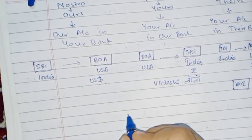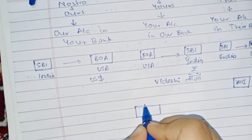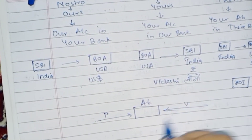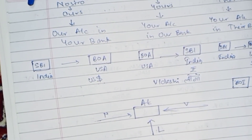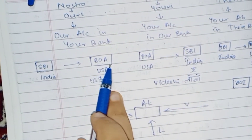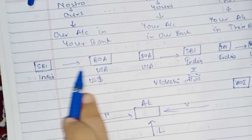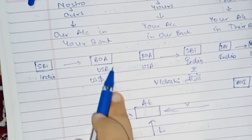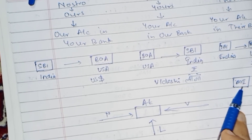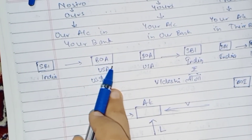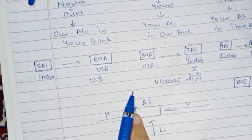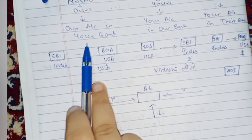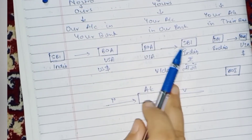So as we can see, the account will be only one — the same account can be regarded as Nostro for someone, Vostro for someone else, and Loro for yet another party. An account in Bank of America which belongs to SBI: for SBI it will be Nostro, for the USA bank it will be Vostro, and for Bank of India this account of SBI in Bank of America will be regarded as Loro. So Nostro, Vostro, Loro — we have to understand from which perspective, which person's perspective, we are looking at it.